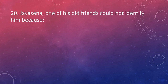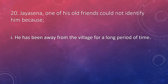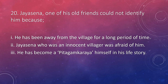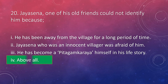The final question: Jaisen, one of his old friends, could not identify him because he has been away from the village for a long period of time. Jaisen, who was an innocent villager, was afraid of him, and he has become a Peter Kamkaryo himself in the story — above all. As a mature filmmaker, Tisha goes back to his village and finds he has become a Peter Kamkaryo, an outsider himself. The village has changed a lot, and he finds himself alienated and fears being connected to his past again. His friend Jaisen could not identify him — as an innocent villager, he might have been reluctant to communicate with a rich stranger. Tisha feels he has become an outsider from his own past memories.